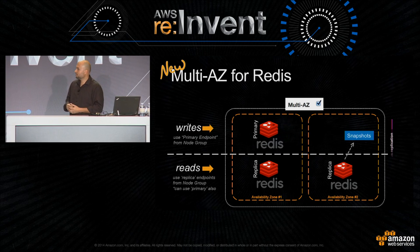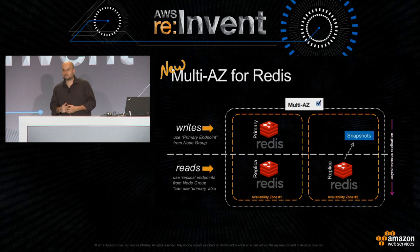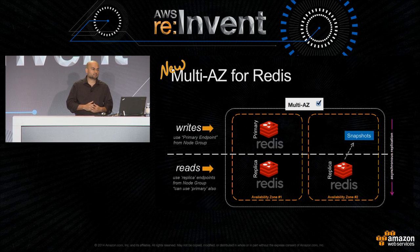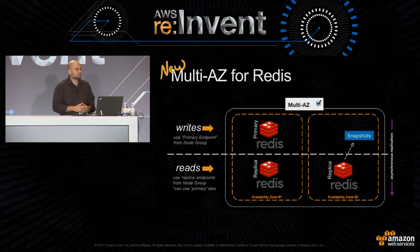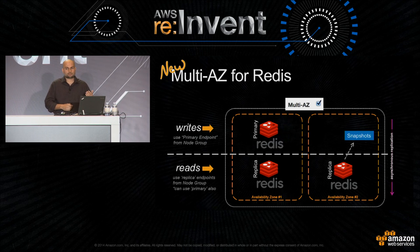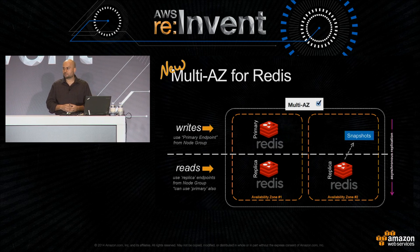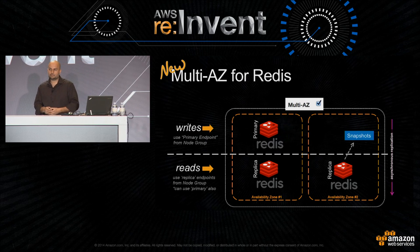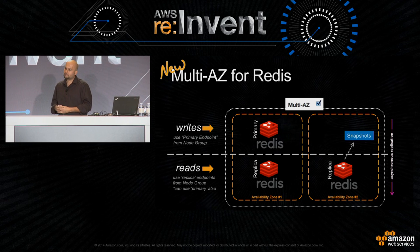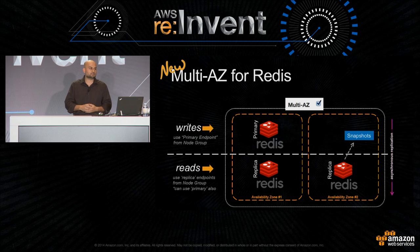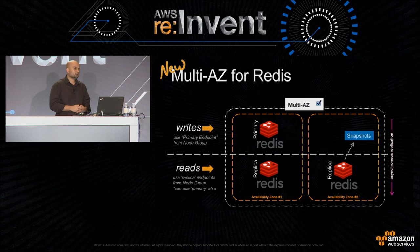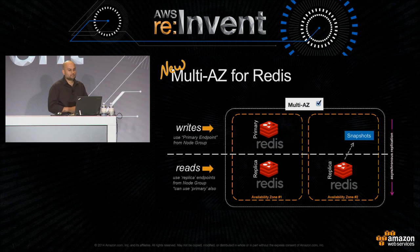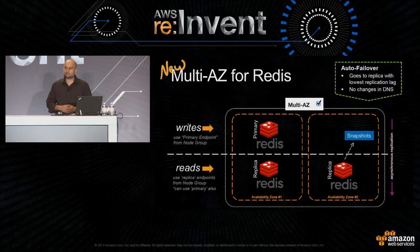In the Redis scenario, there's a constant asynchronous replication happening between the master and the replicas. There's a continuous asynchronous process sending all the transactions from the master to the backup. What's important to know is that this is asynchronous, so there could be a bit of a delay — that's called the replication lag. In reality, it's trivially small. But we use it to figure out auto-failover.